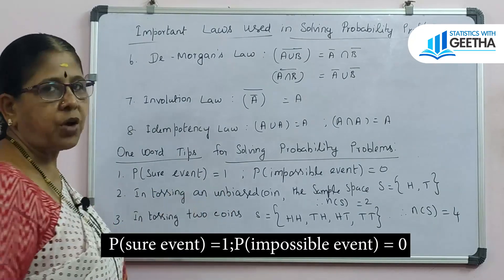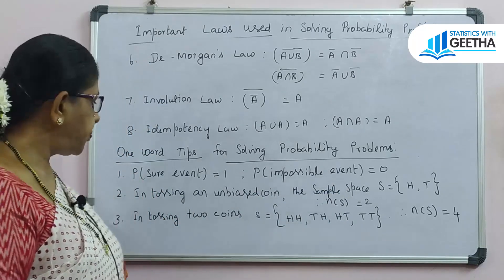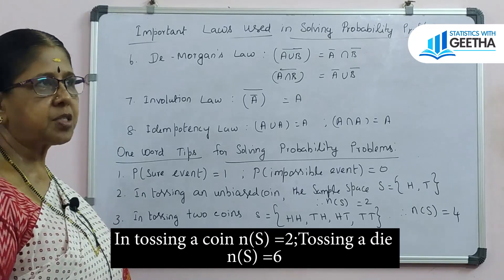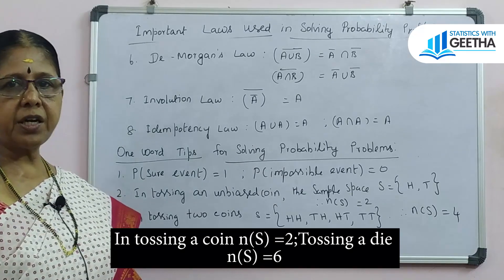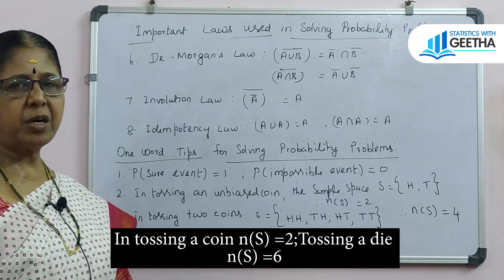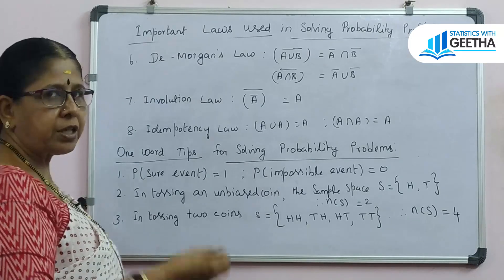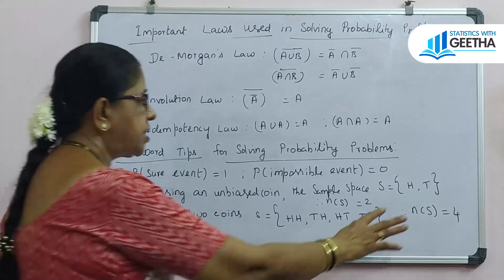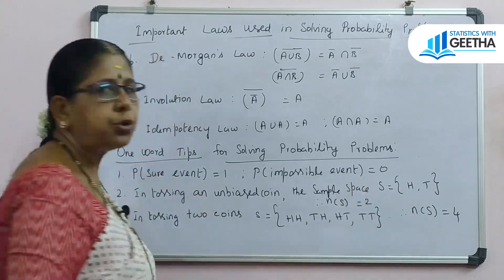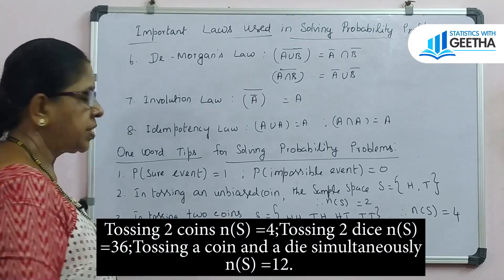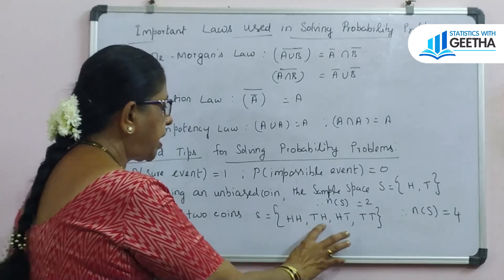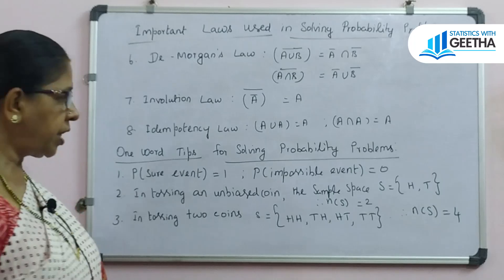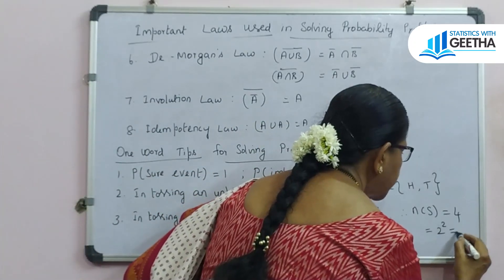Probability of a sure event equals 1; probability of an impossible event equals 0. In tossing an unbiased coin, the sample space consists of 2 sample points — head and tail — so n(S) equals 2. In tossing 2 coins, the sample space consists of 4 points: head-head, tail-head, head-tail, tail-tail, so n(S) equals 4, which is 2 squared.